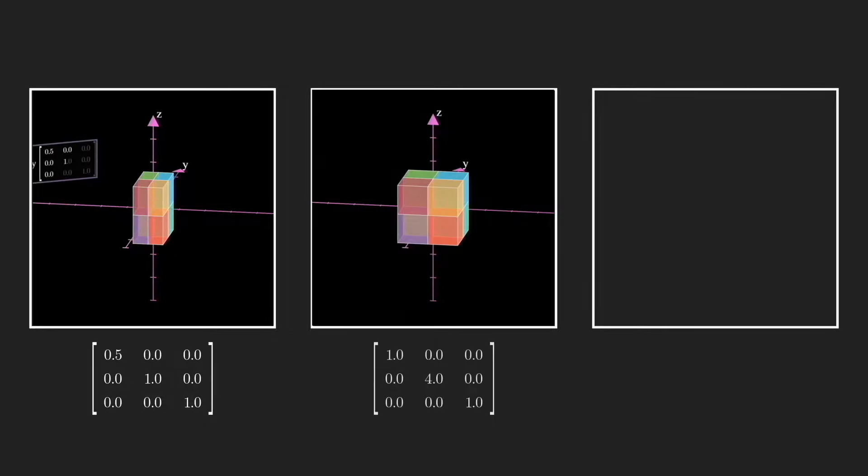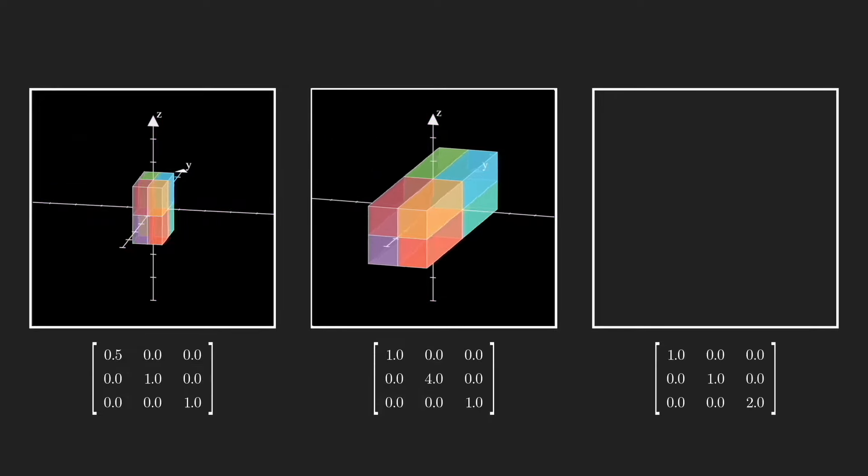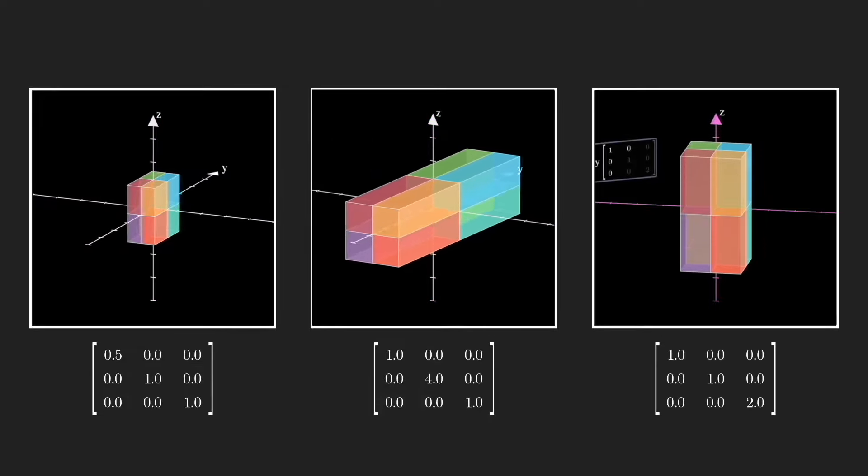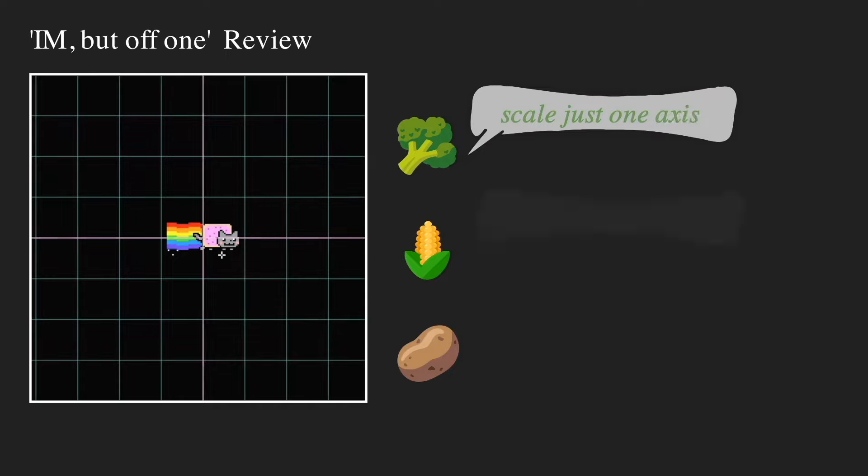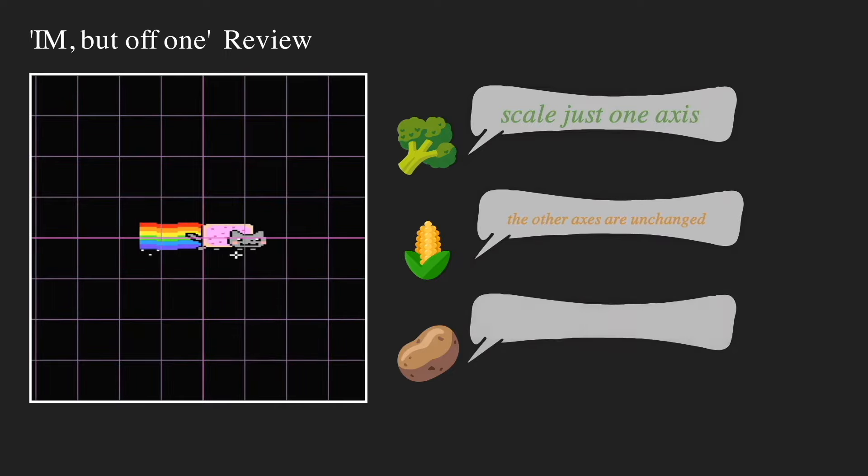Off1 matrix behaves very predictably in three-dimension. It's the scaling of just the x-axis, just the y-axis, or just the z-axis.